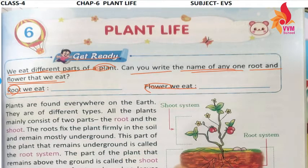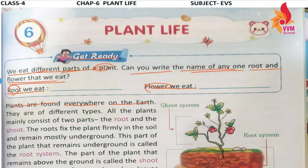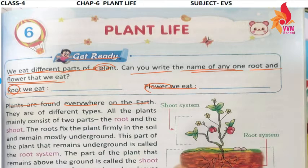Plants are found everywhere on the earth. Plants are present on all surfaces of the earth. If you go to hills, then also in hills. If you go to valleys — your earth is not the same everywhere. Some valleys, some mountains, some water, some seas — in all these parts of the earth, plants are present. These plants are of different types.